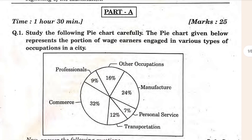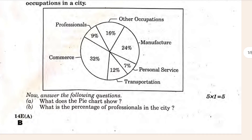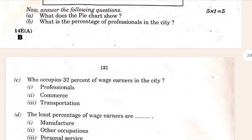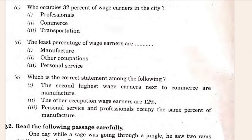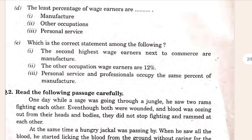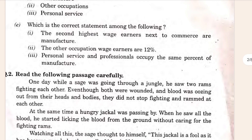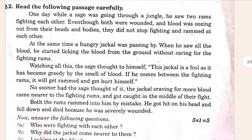This is Part 1, and you can see a pie chart is given. According to this, the question is: answer the following questions. Who occupied 32 percent of wage zones in the city? What is the least percentage of wage earners? Which is the correct statement among the following? And read the following passages carefully.